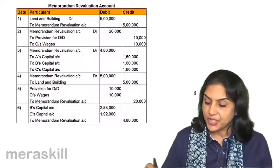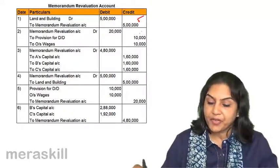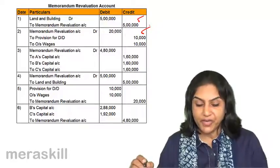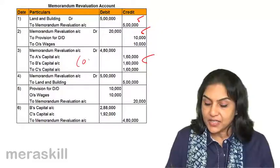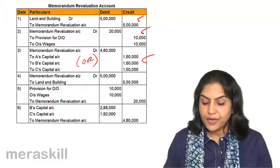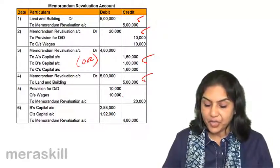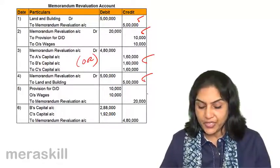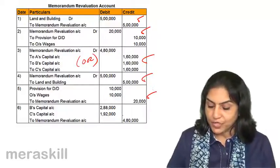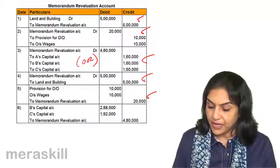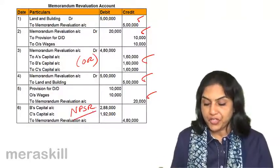Let us see a neater presentation. Land and building to memorandum revaluation; memorandum revaluation to provision for doubtful debts and outstanding wages; memorandum revaluation to A, B, and C — this is in the old ratio. Then we reverse all the above entries: memorandum revaluation to land and building; provision for doubtful debts and outstanding wages to memorandum revaluation; and B's capital and C's capital to memorandum revaluation account — this is in the new profit sharing ratio.